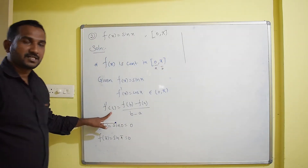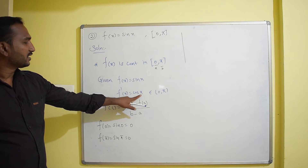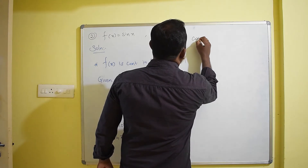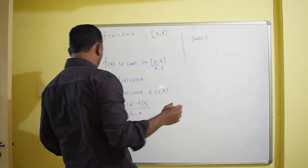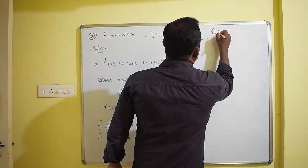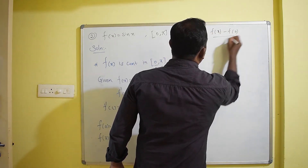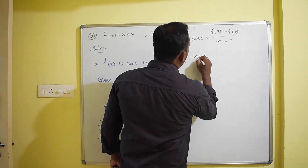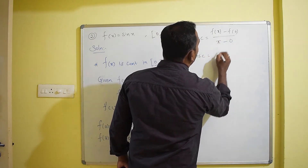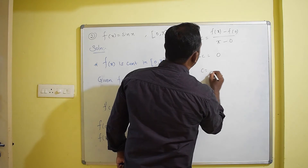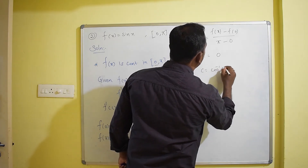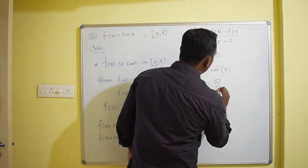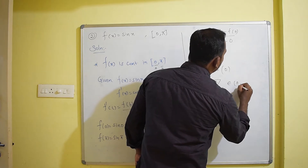We know f'(x) = cos x, so f'(c) = cos c. Substituting: cos c = [f(π) − f(0)] / (π − 0) = (0 − 0) / π = 0. Therefore c = cos⁻¹(0) = π/2, which lies in the open interval (0, π).